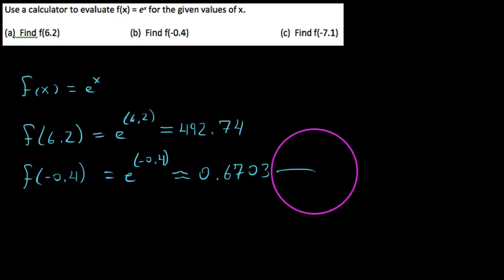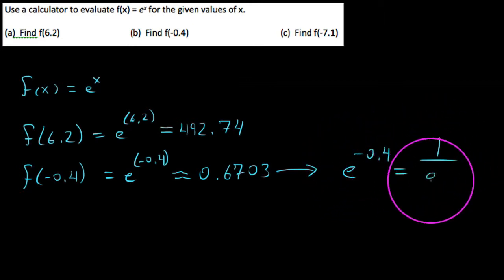Recall that E to the negative 0.4 would be the same thing as 1 over E to the positive 0.4, so really we diminished this is what we essentially did.